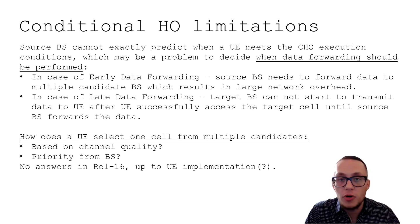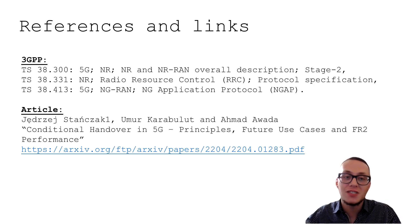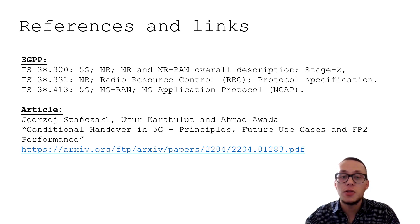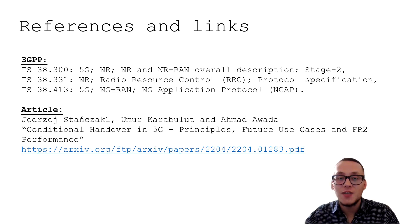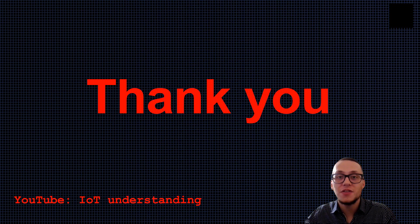Some handover issues to highlight: the source base station cannot exactly predict when the UE will meet the special condition that was sent in advance, making it tricky to decide when and how data forwarding should be performed. Another issue relates to how the user equipment will choose among potential target candidates — based on signal quality priority sent from the base station, or UE implementation aspects. For references, there are 3GPP specifications and a recommended article titled 'Conditional Handover in 5G: Principles, Future Use Cases and FR2 Performance', which you can find online. That was my short lesson about conditional handover aspects in 5G networks. If you like this lesson, please like and subscribe to my channel. Goodbye!